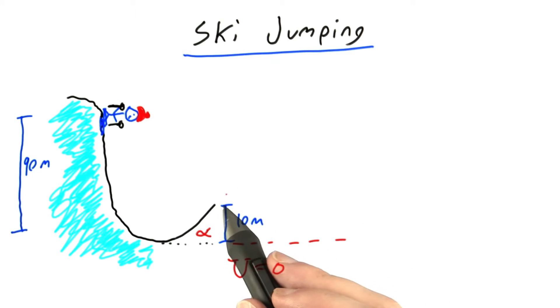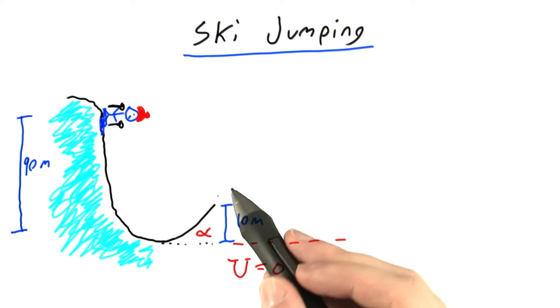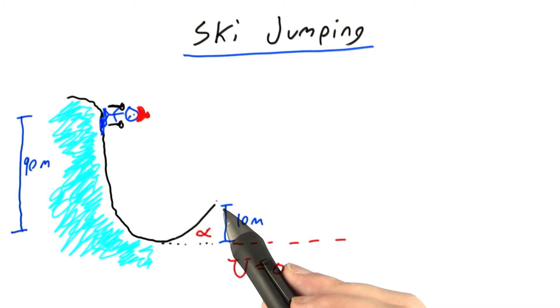For the first part of the problem, I want to figure out the speed of the skier at this point right here when he finally leaves the ramp, because then it's just a projectile motion problem, and we know how to do that from unit 2.